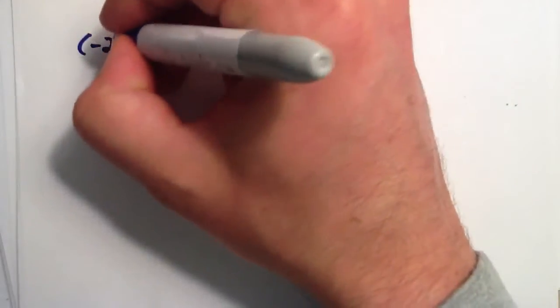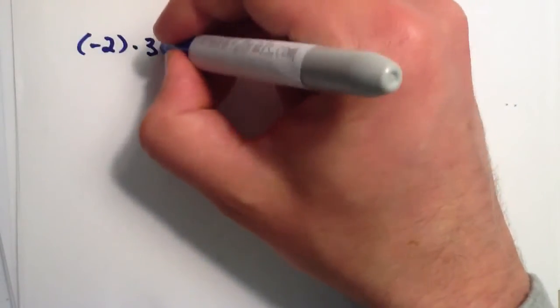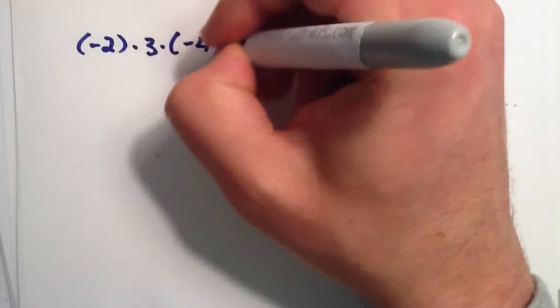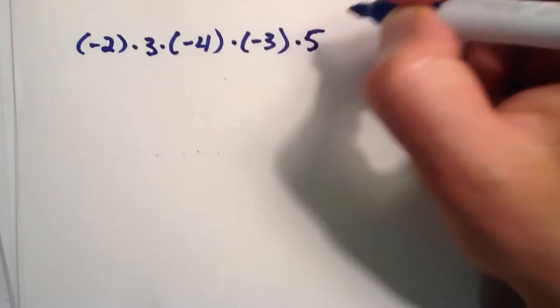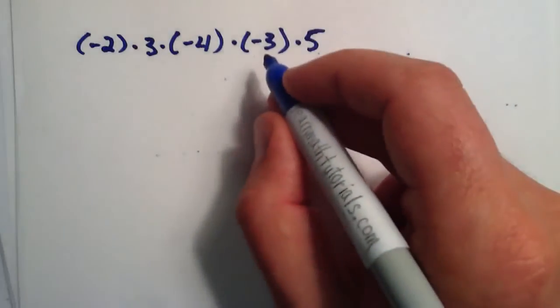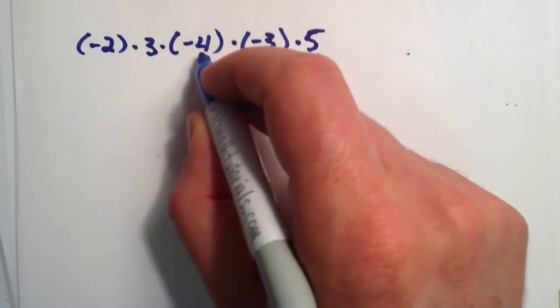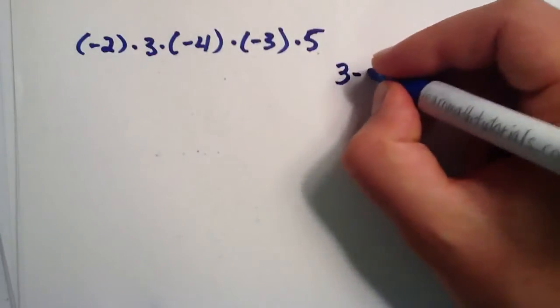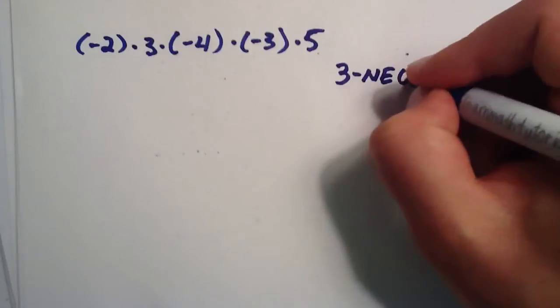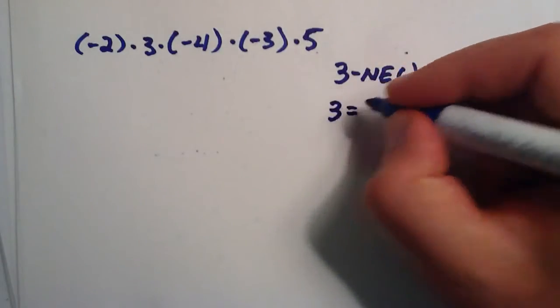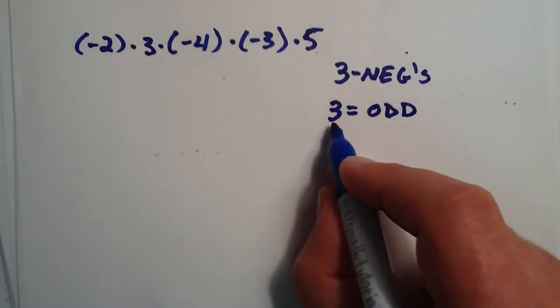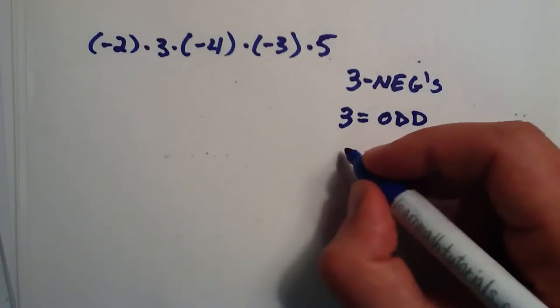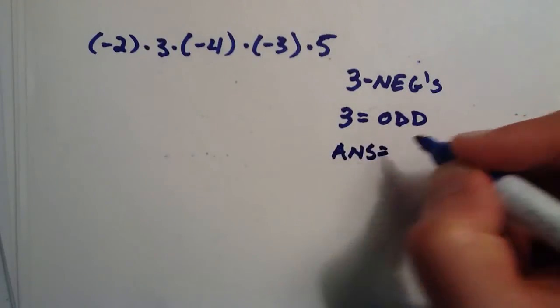Let's look at negative 2 multiplied by positive 3 multiplied by negative 4 multiplied by negative 3 multiplied by 5. We count the number of negatives in our product, which is 1, 2, 3. We have 3 negatives, and 3 is an odd number. The number of negatives we have is odd, which implies that our answer will be negative.